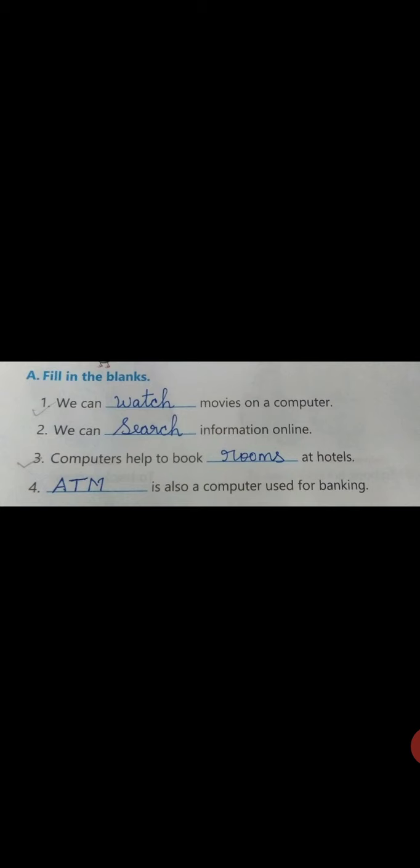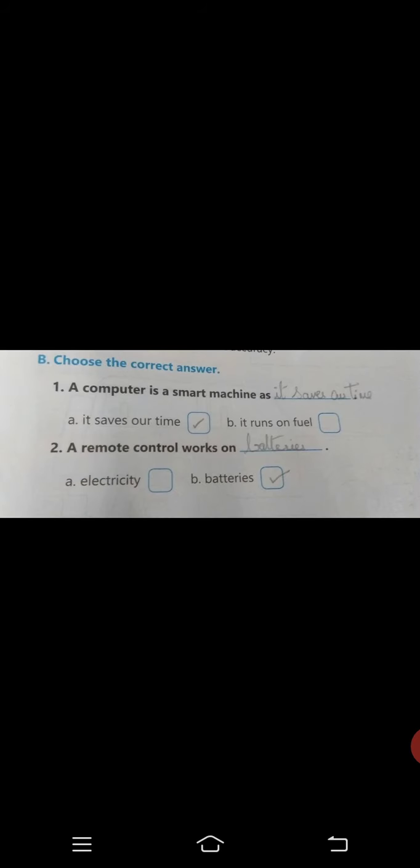We can watch movies on a computer. We can search information online. Computers help to book rooms at hotels. ATM is also a computer used for banking. You know ATM right? Choose the correct answer. A computer is a smart machine as it saves our time. A remote control works on batteries. Electricity or batteries? Yes, batteries. Look on to the answer and you have to tick, then take and write in the fill-ups.